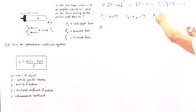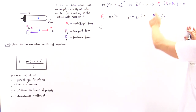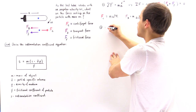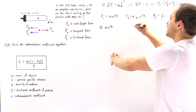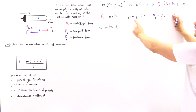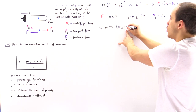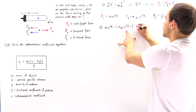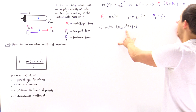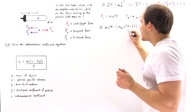Substituting these into our equation, we get: m·omega²·r minus (m_displaced·omega²·r plus f·v) equals zero. The next question is: how do we represent the displaced mass of fluid?